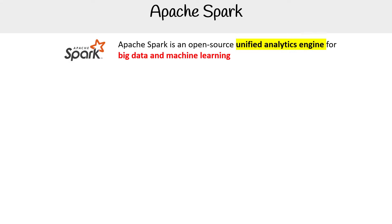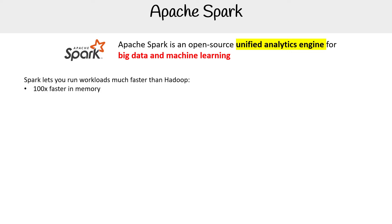Apache Spark is an open source unified analytics engine for big data and machine learning, and Spark lets you run workloads much, much faster than Hadoop, though you can run it in the Hadoop system. It's 100 times faster in memory and 10 times faster on disk, which is why Spark is described as lightning fast.